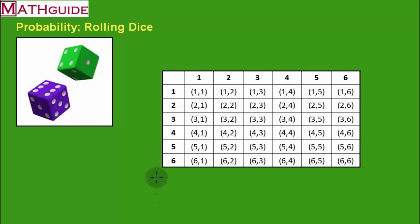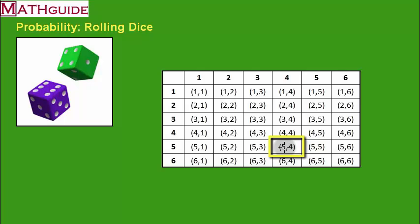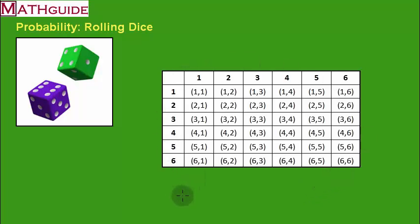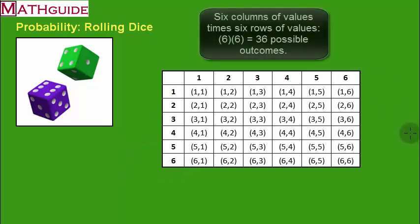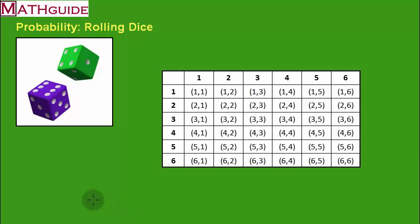The blue die is represented by rolls on the left side of the table and the green die is represented by rolls at the top. So for instance, an element within this table would be a four on the blue die and a four on the green die. We're going to use this table because it lists all the possible outcomes. There are 36 possible outcomes, which corresponds with the fundamental counting principle — six outcomes for one die times six for the other gives 36 combinations.